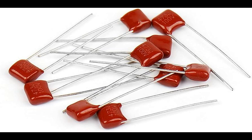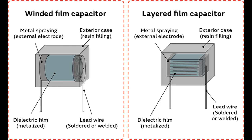Film capacitors use a thin plastic film as the dielectric material and are known for their stability, reliability, and wide range of capacitance values. Polyester film capacitors (mylar capacitors) use a polyester (PET) film as the dielectric material. They offer good stability, moderate capacitance values, and are cost-effective for general-purpose applications, commonly used in filters, coupling, timing circuits, and bypass applications.